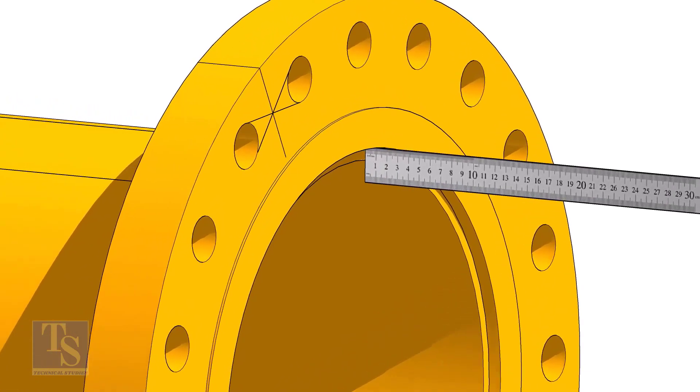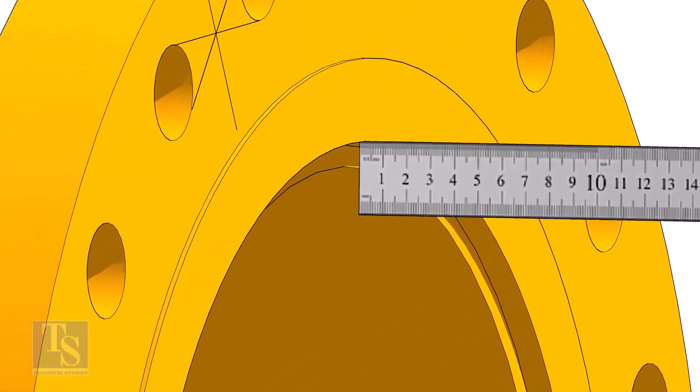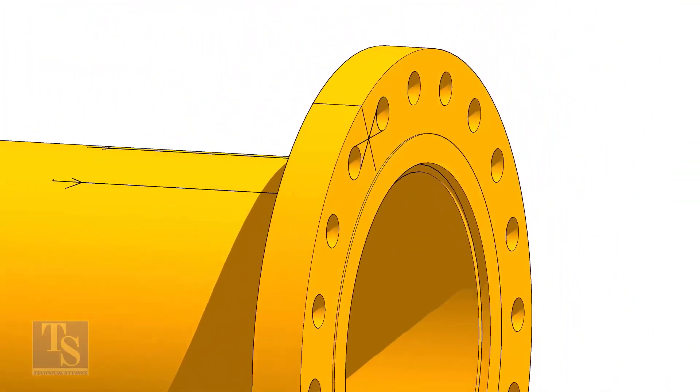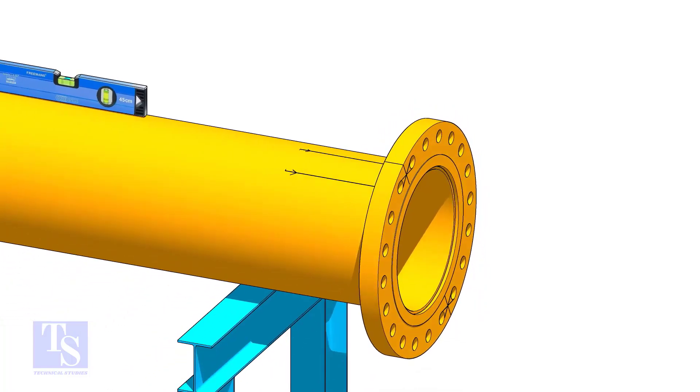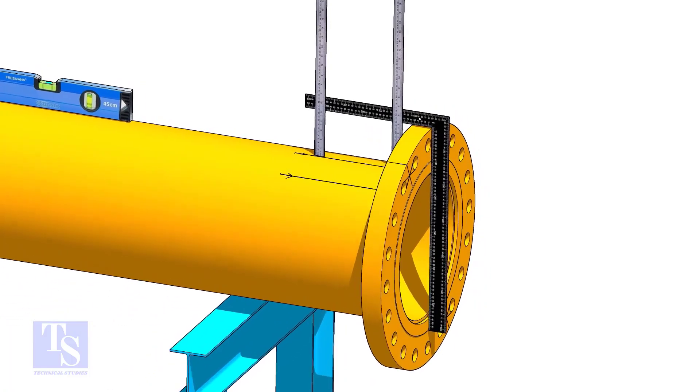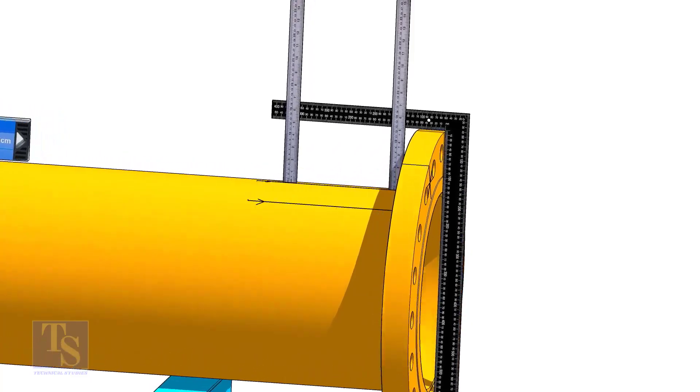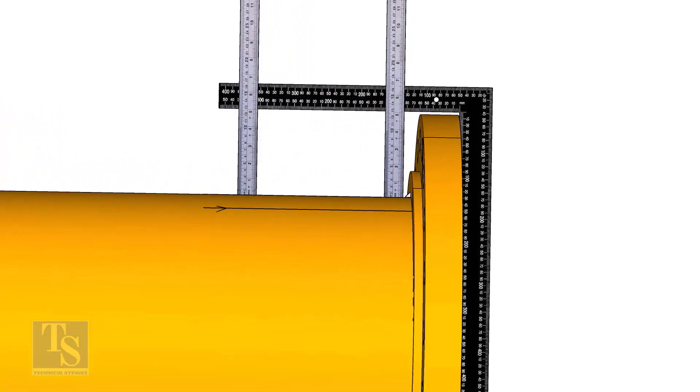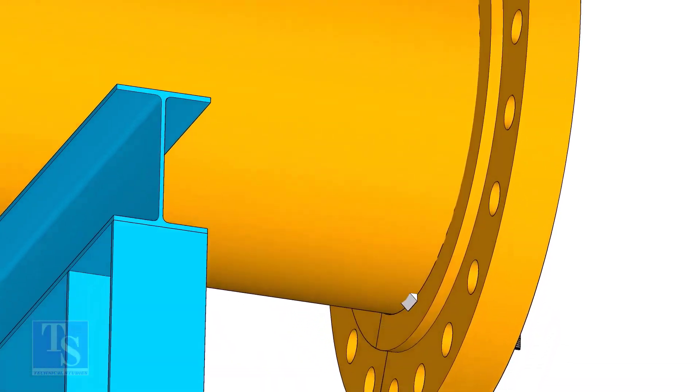Fix the distance between the flange face and the pipe face. Usually, this measurement is equal to the thickness of the pipe. Tack weld on the top of the pipe with the flange and check the squareness. If correct, tack weld at the bottom side also.